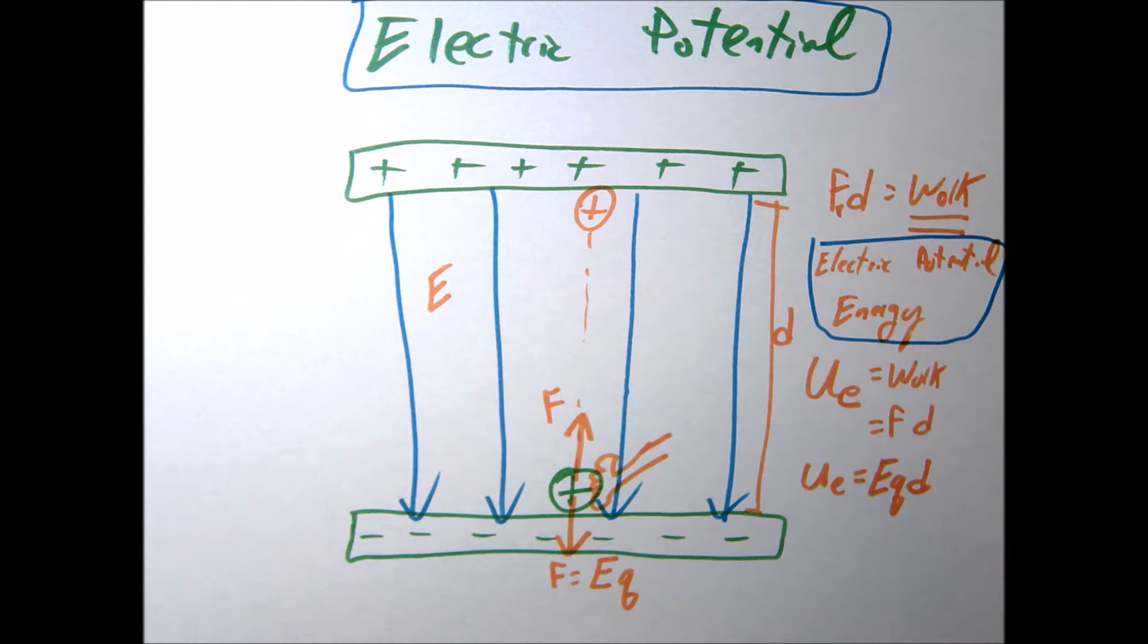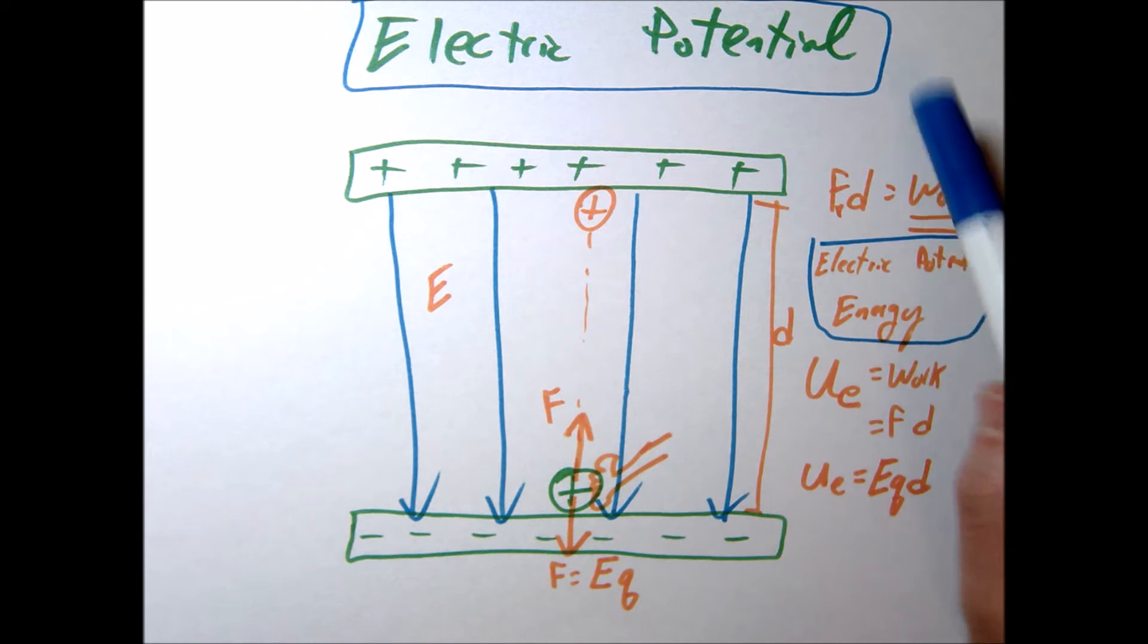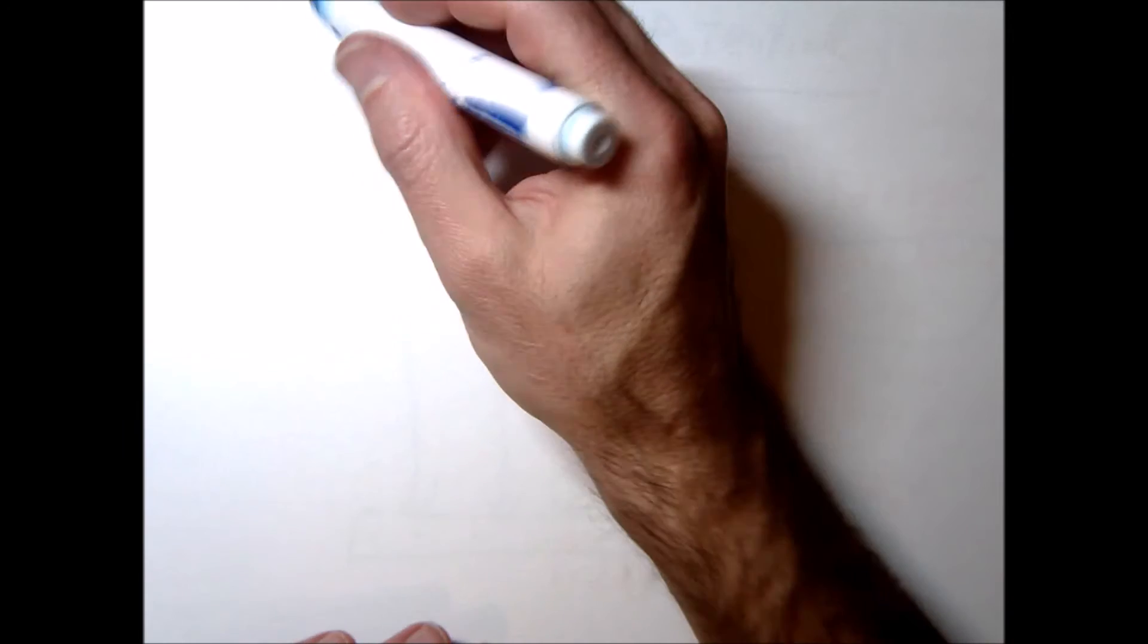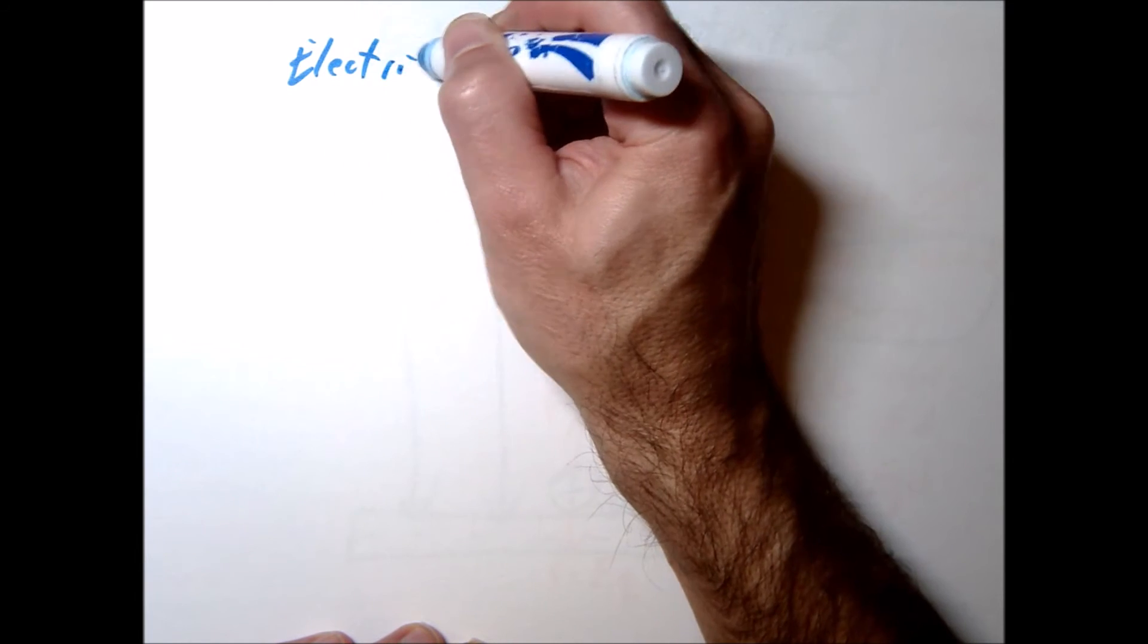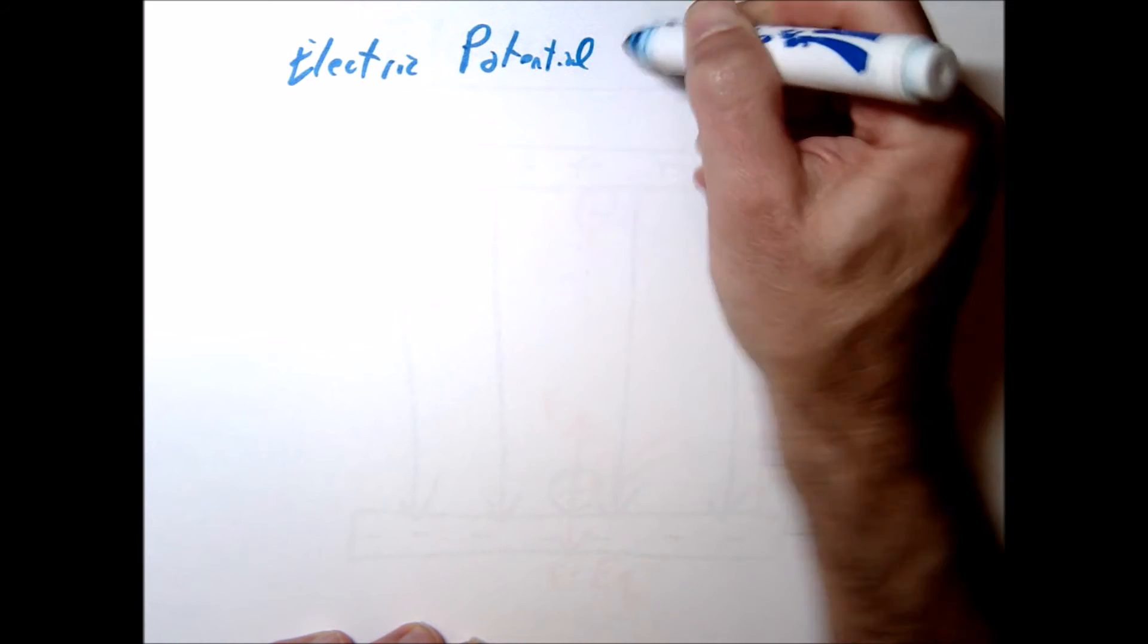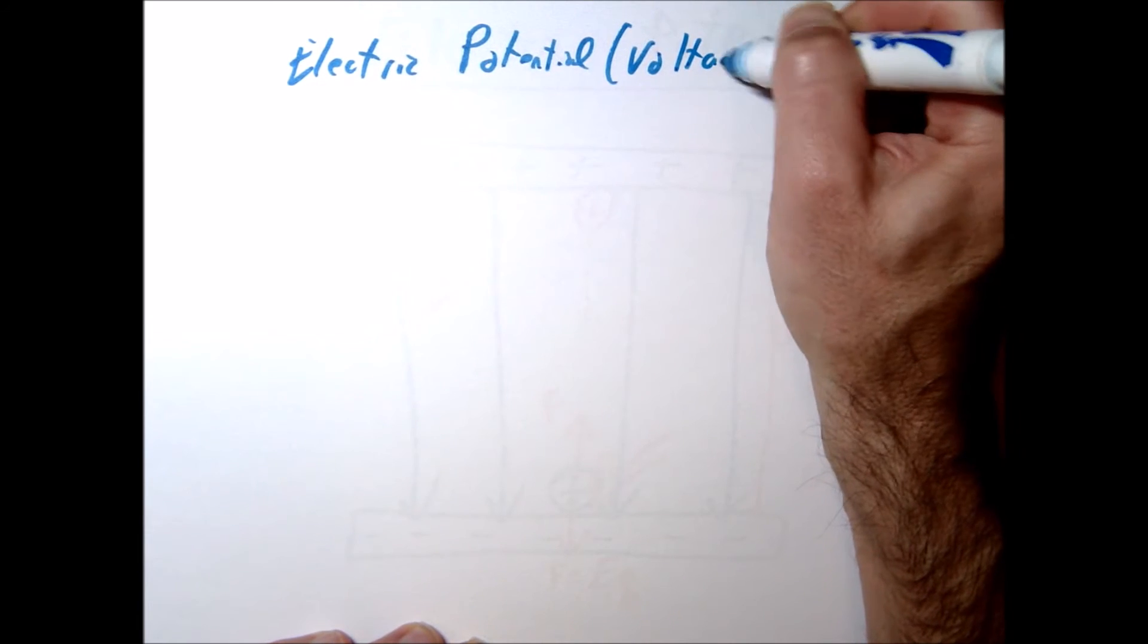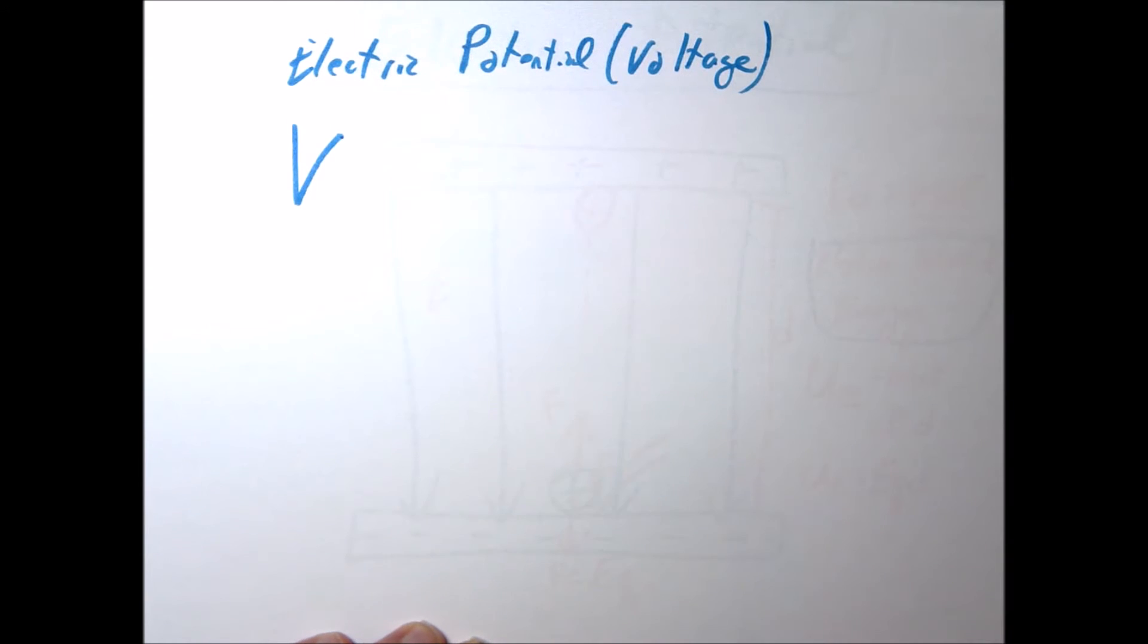So electric potential energy is what we've been talking about here. There's another term called electric potential. These two words are often mixed up. So let's just kind of define electric potential. So electric potential, the symbol we often use is V. And that's because you'll often hear this referred to as a voltage. We use the symbol V here.